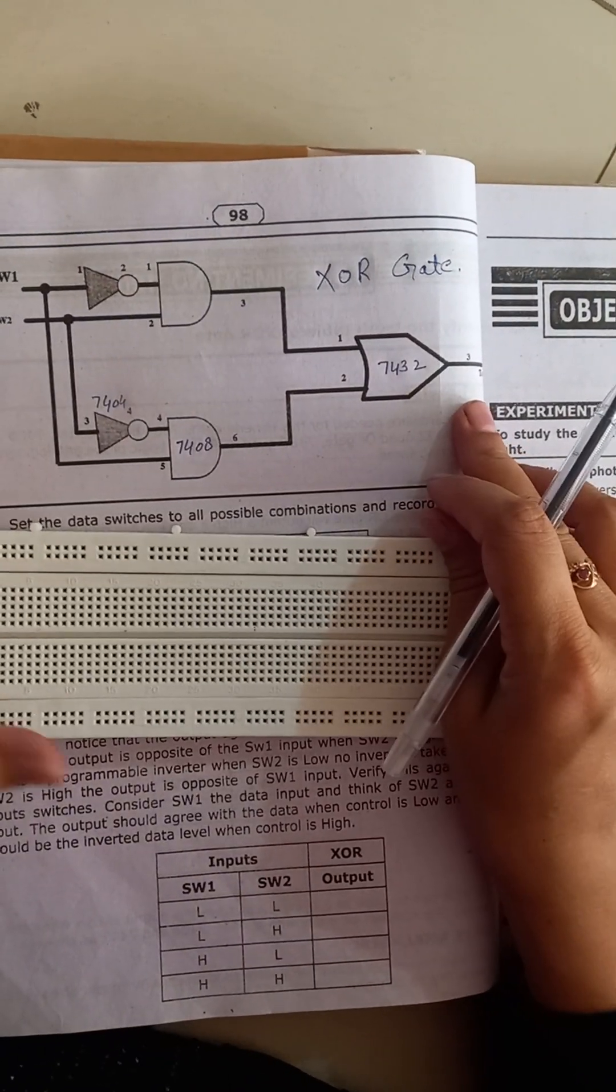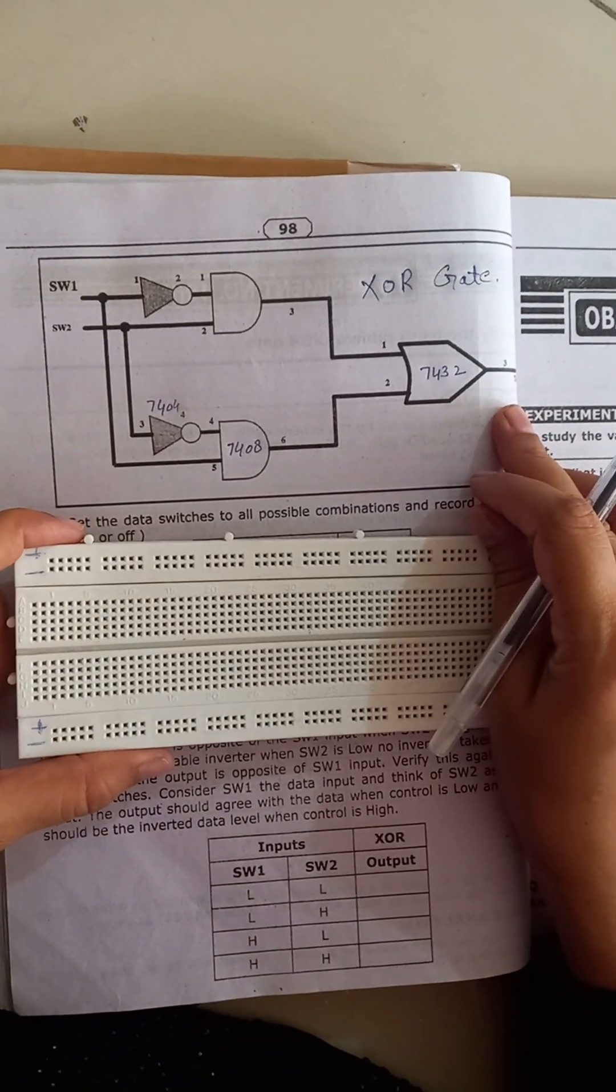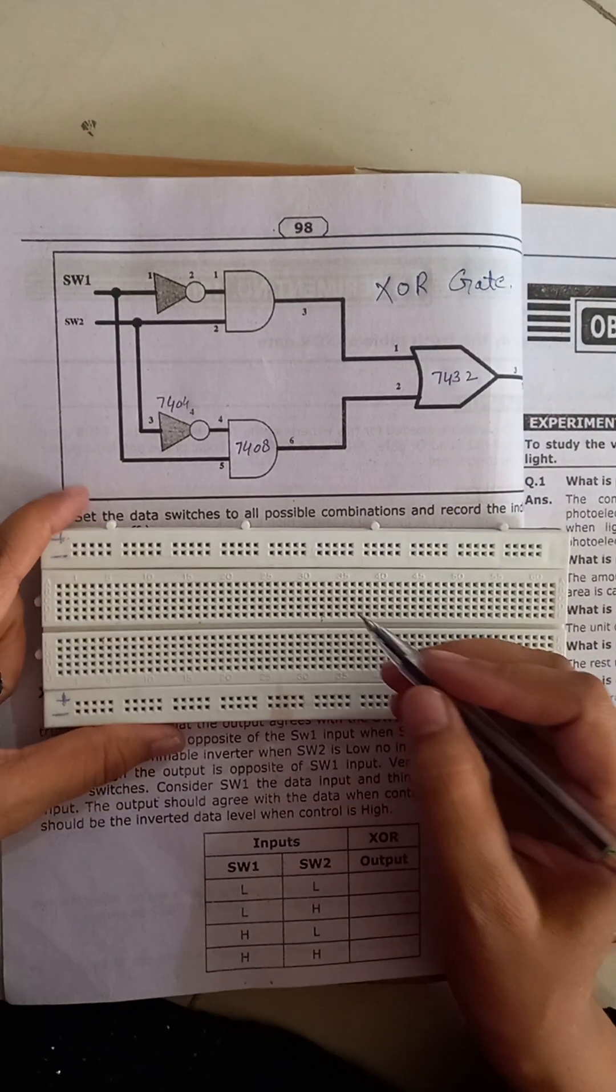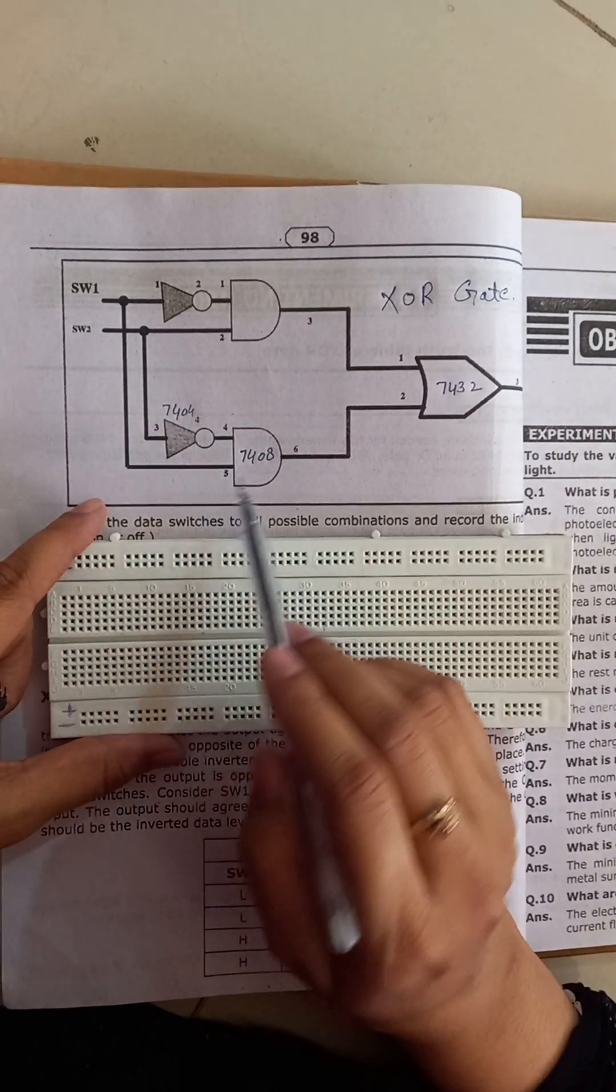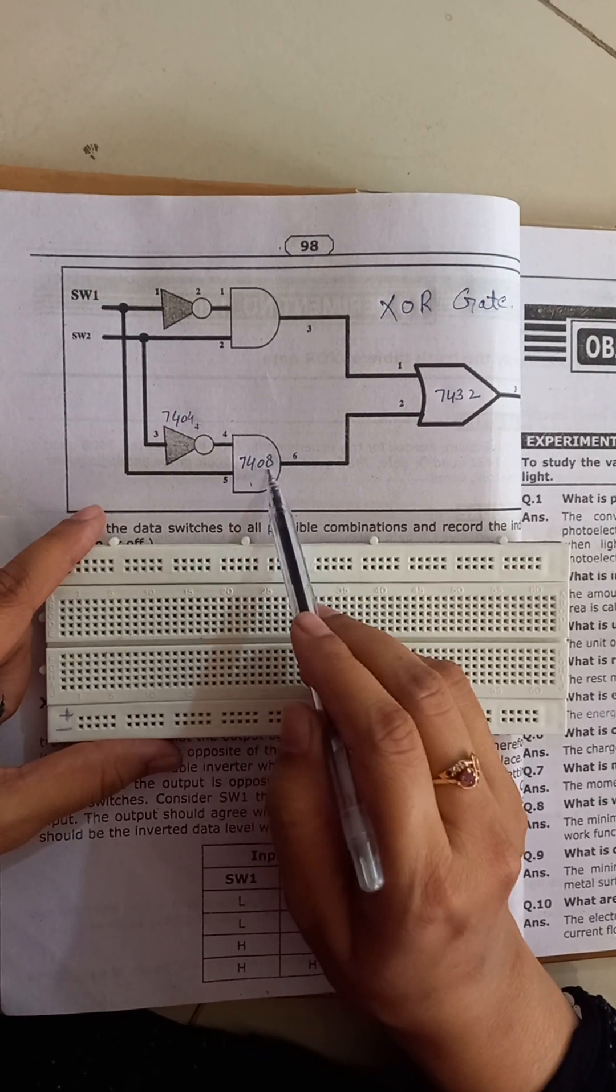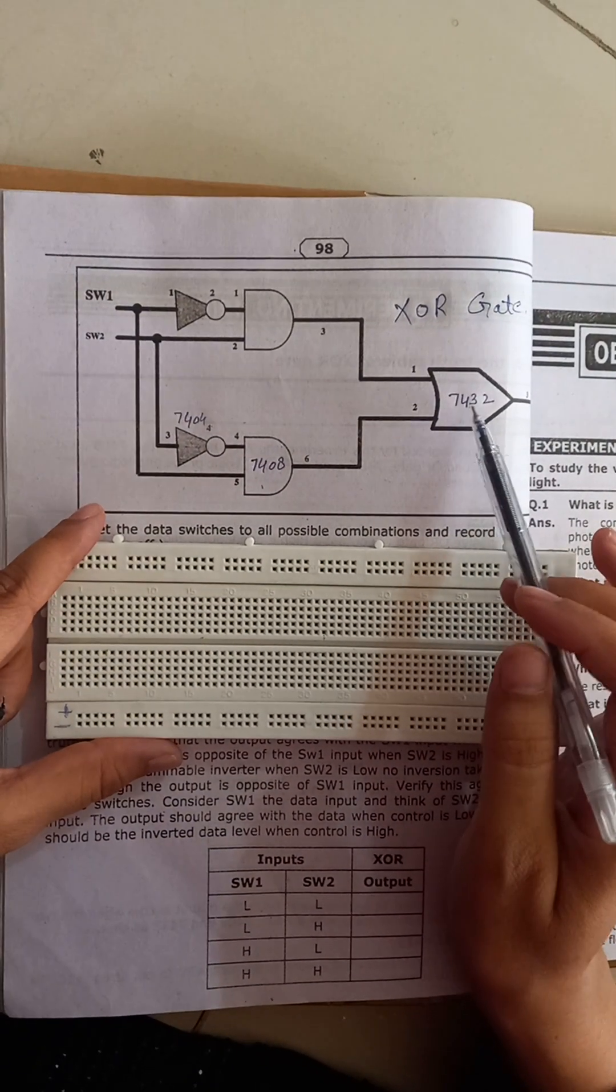Hello students, today we are designing an XOR gate, exclusive OR gate on the breadboard using three ICs: NOT gate IC 7404, AND gate IC 7408, and OR gate IC 7432.